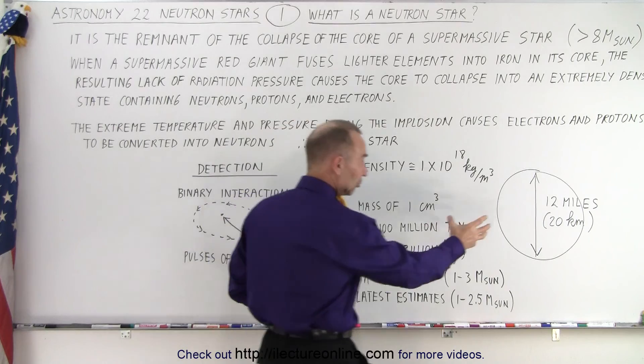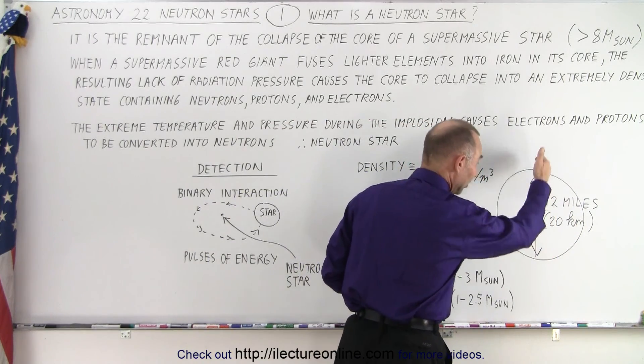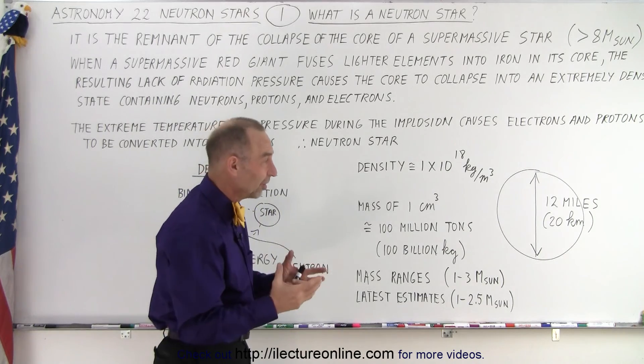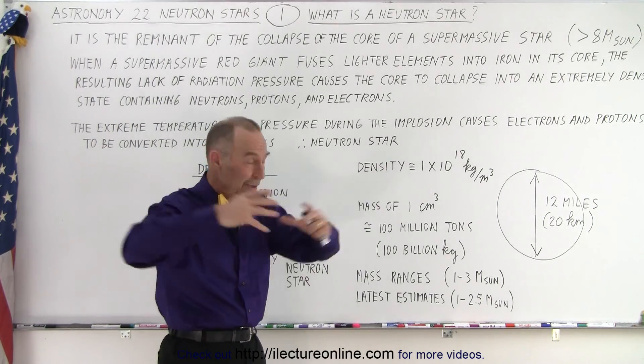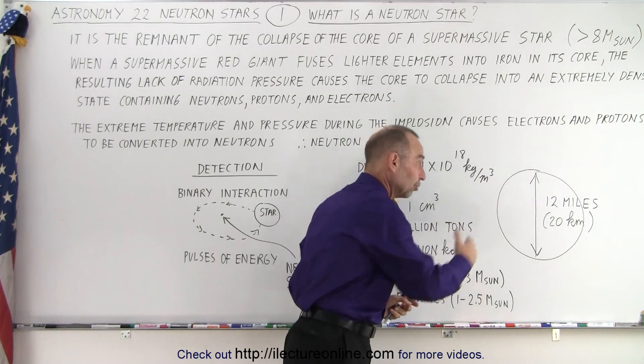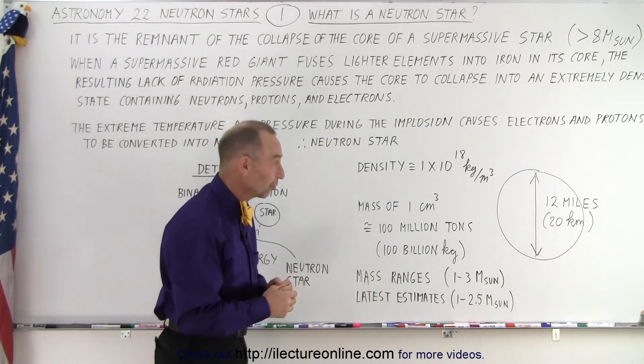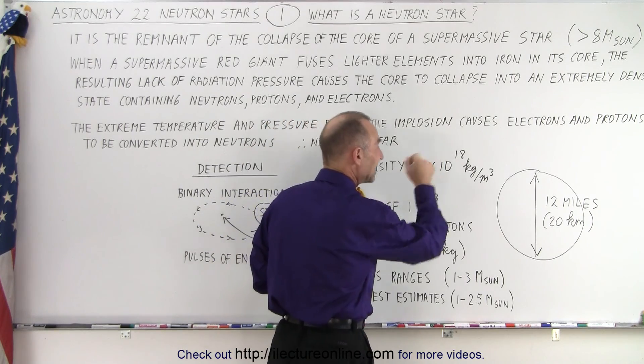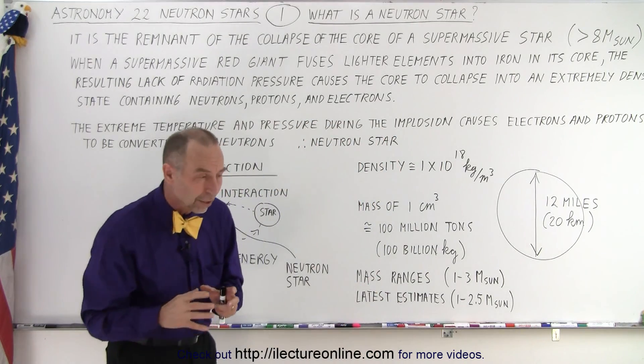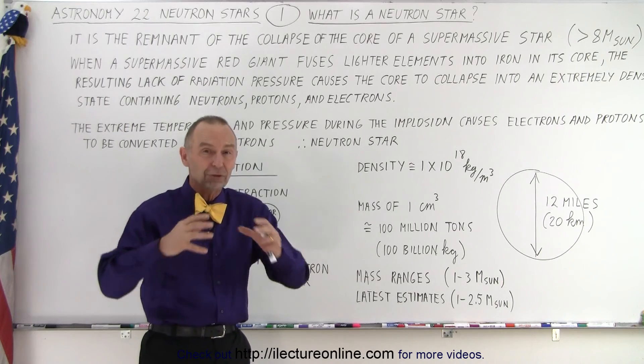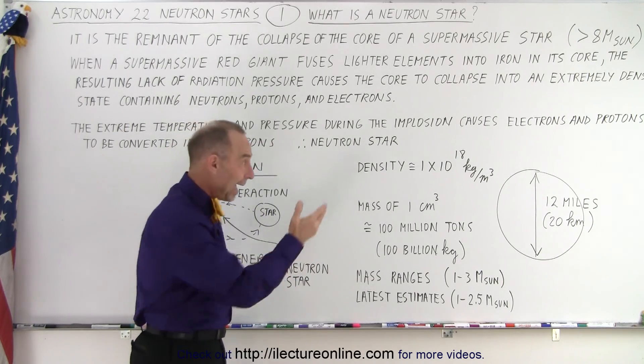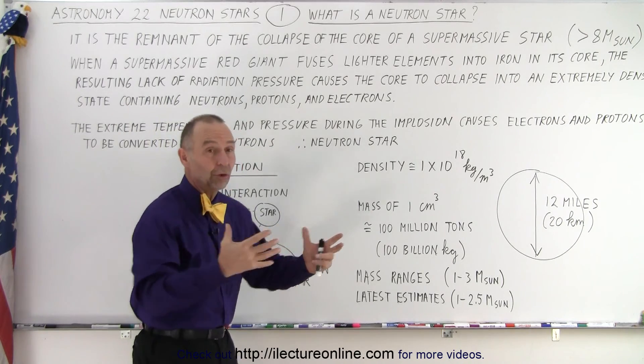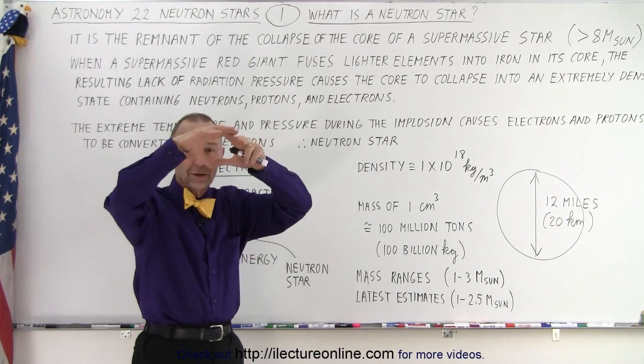Now, the size of a neutron star is relatively small, you can see it's about 12 miles across, yet it has a mass greater than the mass of the sun. Imagine the sun compressed down to something no bigger than 12 miles across, or 20 kilometers across. The density is absolutely enormous, approximately about 1 times 10 to the 18 kilograms per cubic meter, which is the approximate density of nuclear material. So the nucleus of an atom has that kind of density, in other words, a neutron star is almost essentially a big nucleus.